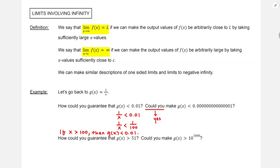In the vertical asymptote realm: how could we guarantee that g of x was greater than 51? Let's do the same process. 1 over x is greater than 51 — we can make that happen provided that x is less than 1 over 51, and also greater than 0. So if that happens, we've got 1 over x being greater than 51. Like if x is 1 over 100, then 1 over x would be 100, which is definitely hitting the mark. So if x is in the interval 0 to 1 over 51, then g of x will be greater than 51.